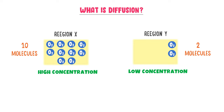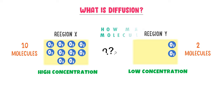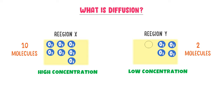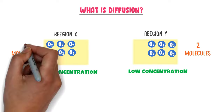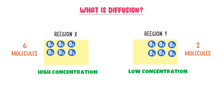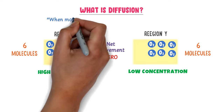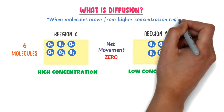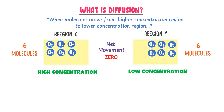How many molecules should move from region X to region Y? The answer is simple: only 4 molecules will move. After that, region X has 6 molecules and region Y also has 6 molecules, so the net movement of molecules will stop. Therefore, we define diffusion as the movement of molecules from a high concentration region to a lower concentration region.